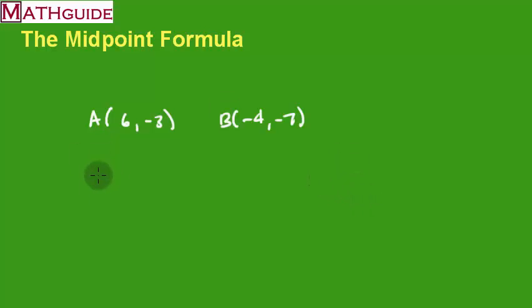The formula says that we're supposed to add the x values. The x values are six and negative four. So, we're going to add them and divide by two. And we're going to do the same thing for the y values. So, we have negative three plus negative seven. We're going to divide those by two. And notice that we're just taking the average of the x values and the average of the y values. Specifically, the mean average.